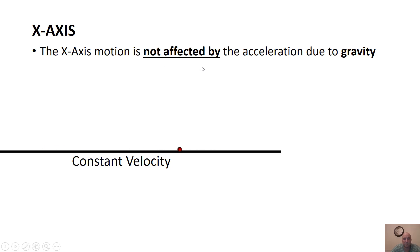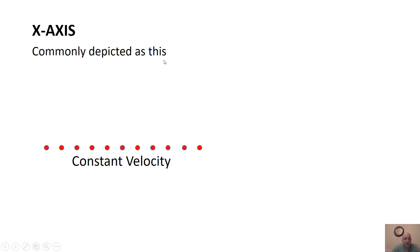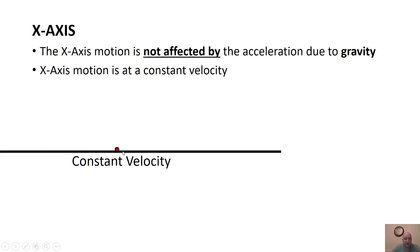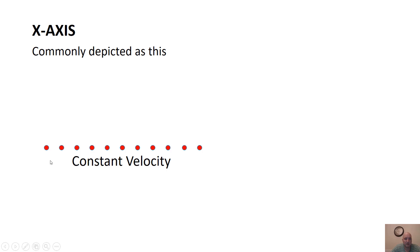The acceleration on the X axis would be zero because it's in constant velocity. This is commonly depicted by a diagram showing equal time intervals — the ball travels the same distance per time interval. Every dot means the same amount of time occurred, and the dots are all equally spaced. Recognize that as constant velocity.